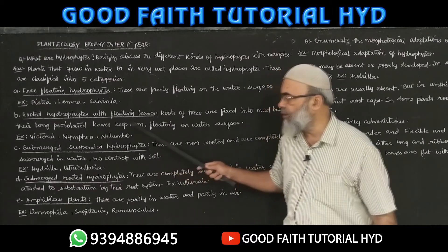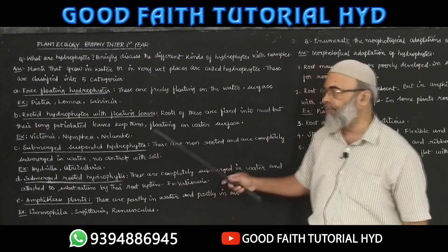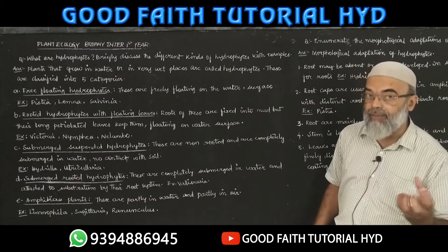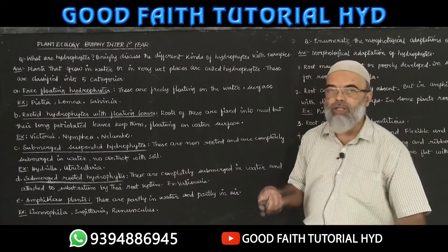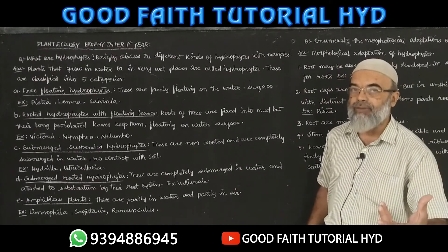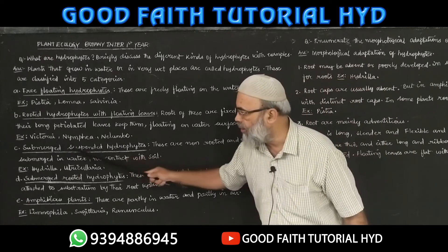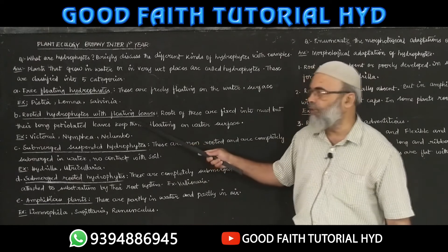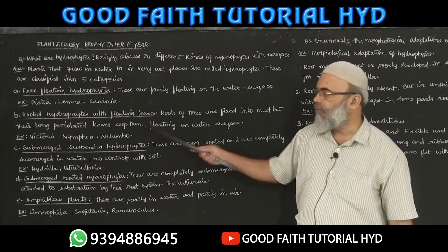Second category: rooted hydrophytes with floating leaves. Their roots are fixed into the mud, but they have long petiolated leaves that keep them floating on the water surface. Examples are Victoria, Nymphaea, and Nelumbo.